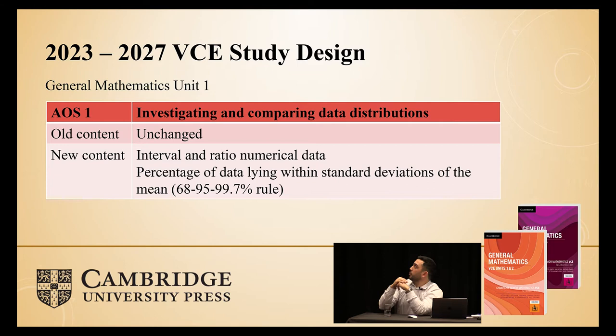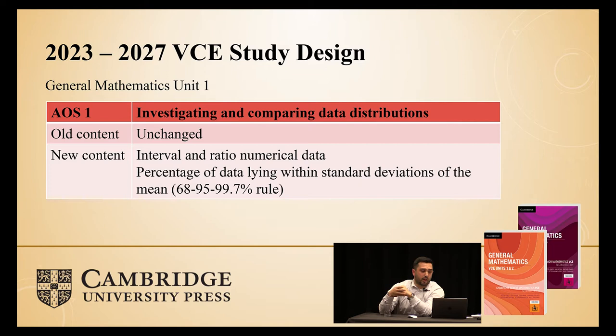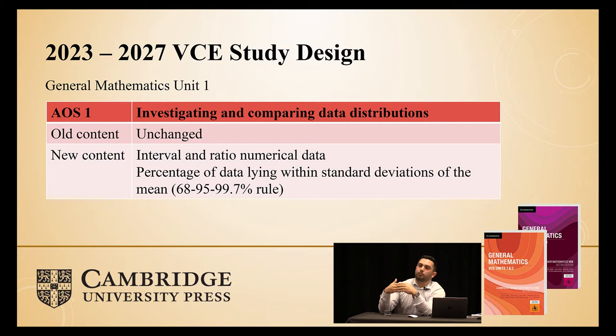Getting into some of the changes, we'll go through one by one each of the areas of study for units one all the way through to unit four, making it clear what the old content is, whether things have been removed, and any new content we can expect. Starting off with data analysis in unit one, there are no changes to the old content, but some concepts — especially for standard deviations, the 68, 95, 99.7% rule — are being introduced in year 11. It won't go into as much depth as year 12, but we will need to train up our students to be more familiar with it in year 11 before they move into that final year.